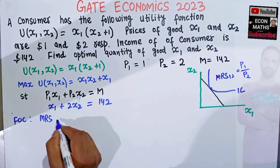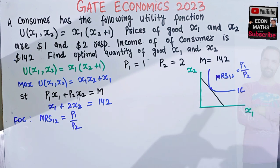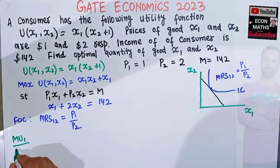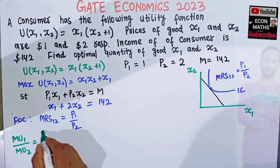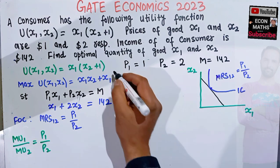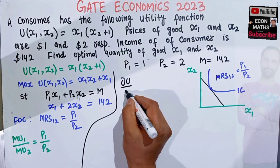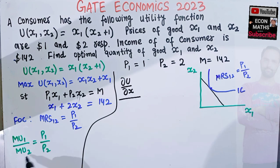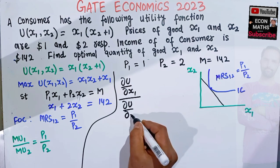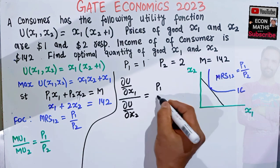The first-order condition for maximization requires that the marginal rate of substitution between good one and two equals the ratio of prices p1/p2. The MRS is defined as the marginal utility of good one divided by the marginal utility of good two, which should equal p1/p2. MU1 is the partial derivative of the utility function with respect to x1, and MU2 is the partial derivative with respect to x2.